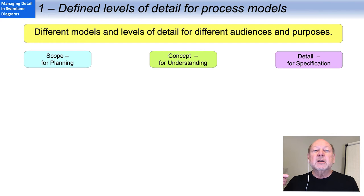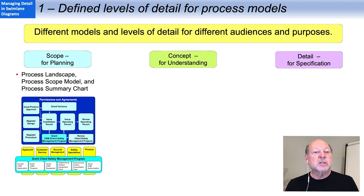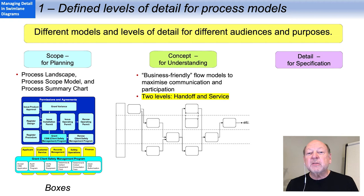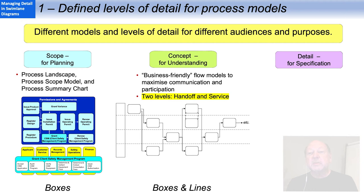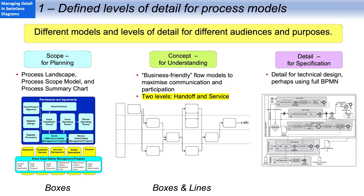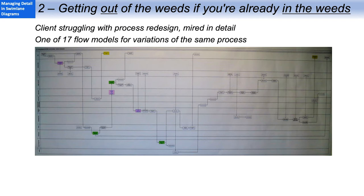These defined levels of detail are known worldwide as scope for planning purposes, concept for developing shared understanding, and detail for capturing specifications. In scope level models, we've looked at those extensively in previous webisodes. That includes our process landscape, our scope model, and so on. We can draw these with just boxes. The concept level models are going to be our business-friendly flow models, which focus on maximizing communication and participation. Today I'll introduce two defined levels of swim lane diagram. We can draw those with just boxes and lines. As for the detailed models, we won't be getting into them. Those are more for technical design, perhaps using full BPMN, and those require boxes, lines, and a lot of widgets. Today our focus is on this concept level.